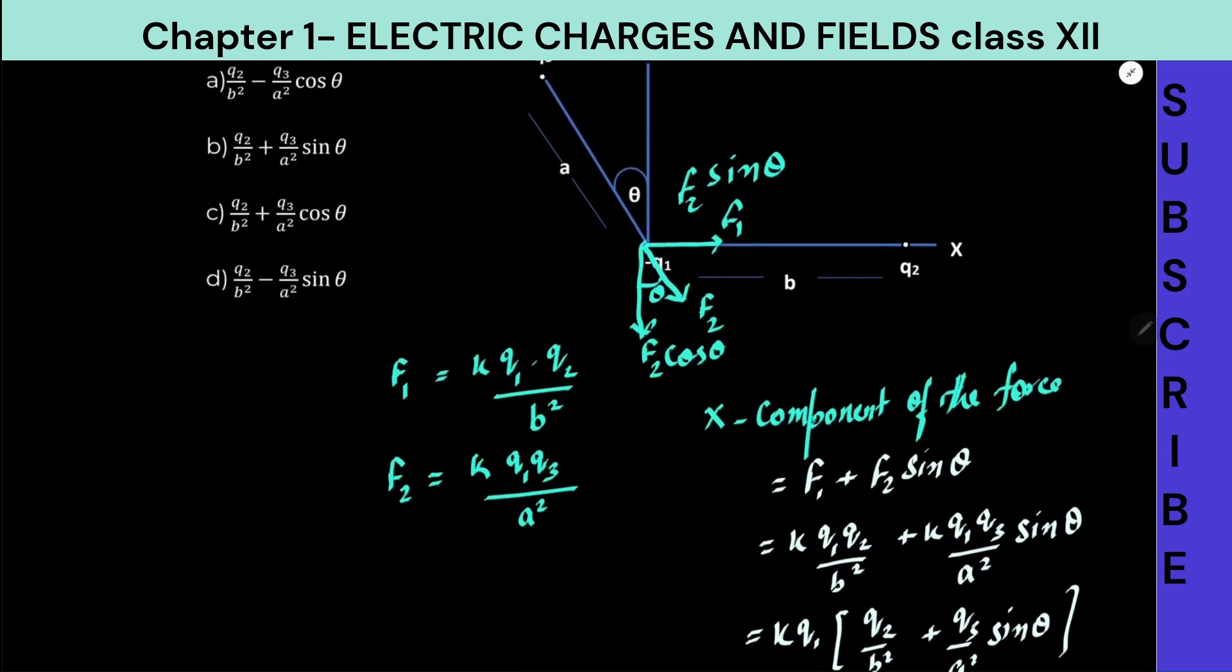So k·q1 we can convert it into proportional, and the final answer will become this part. It will be proportional to q2 upon b² plus q3 upon a²·sinθ, and that is option B. I hope this is clear.